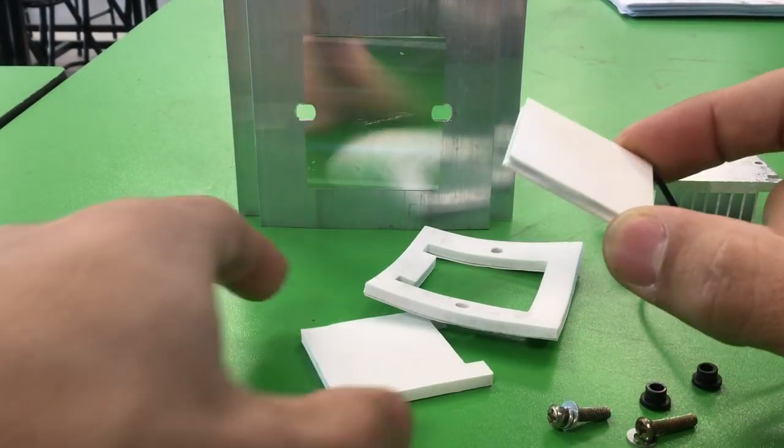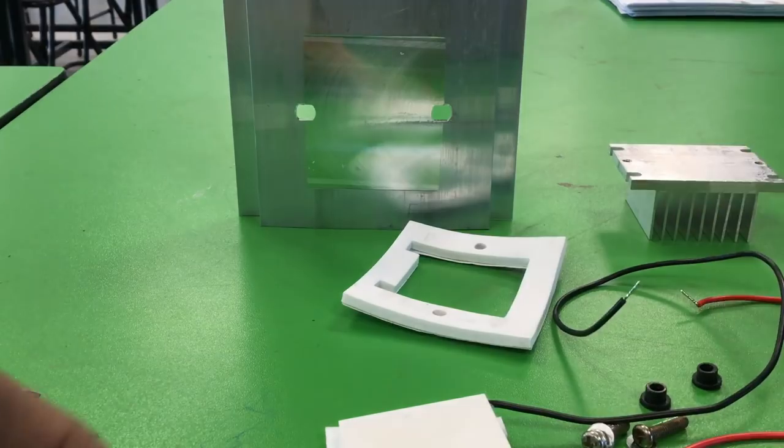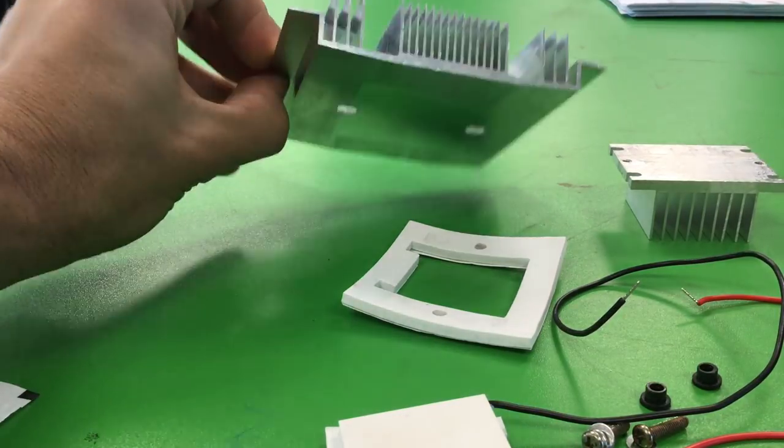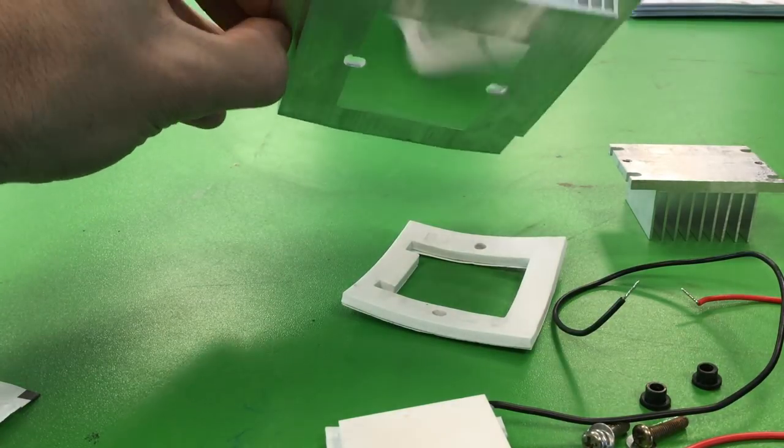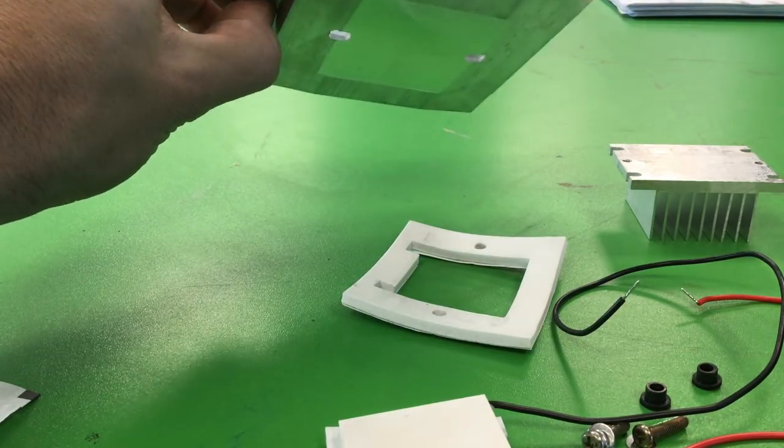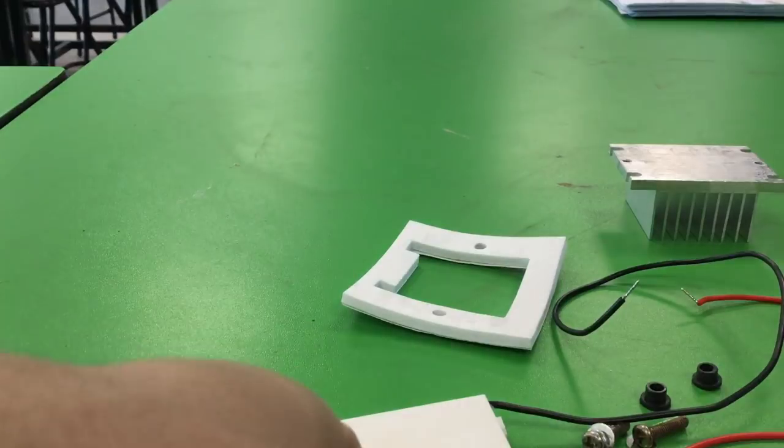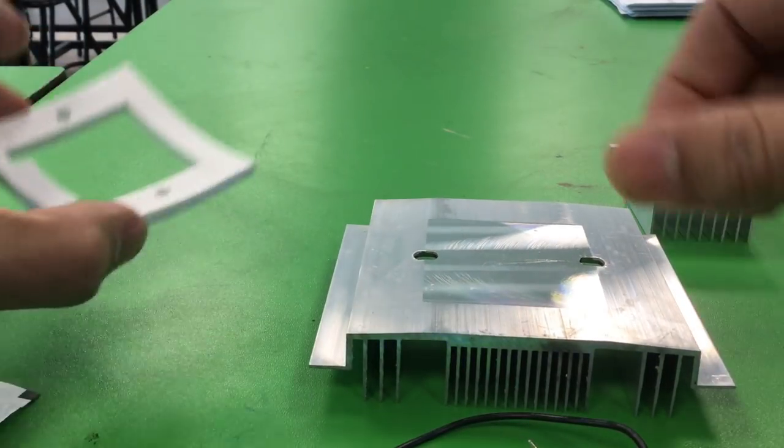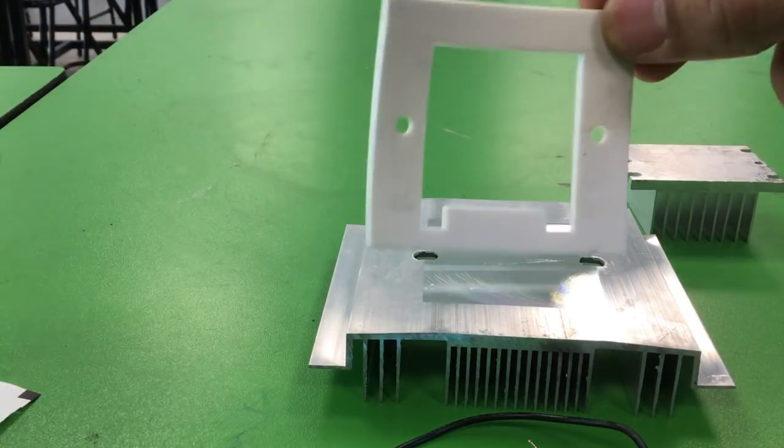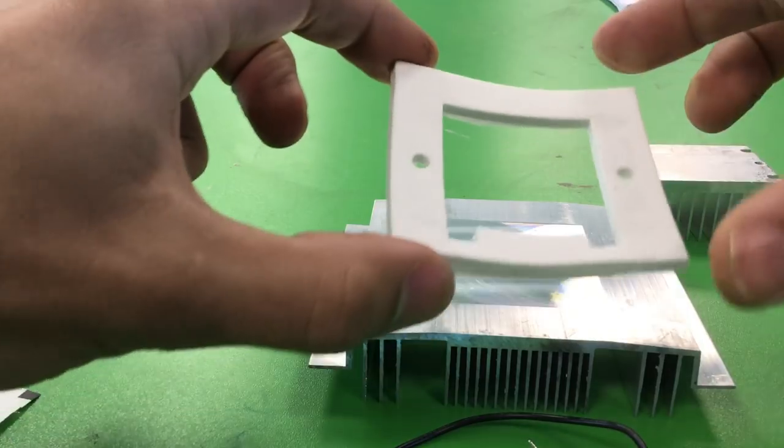So the hot side has this massive aluminum heatsink here which distributes all the heat. This is the one we're going to build up from. Place it down nice and flat, then take this little H-shaped sticker.